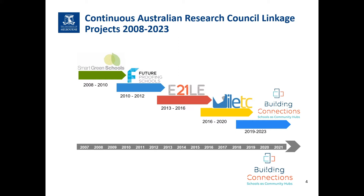The most recent prior project being the Innovative Learning Environments and Teacher Change Project, and others including E21 MLE, focused on evaluating learning environments, future-proofing schools looking at modular school design, and smart green schools, which was about not only the sustainable design of schools but also their pedagogical design as well.